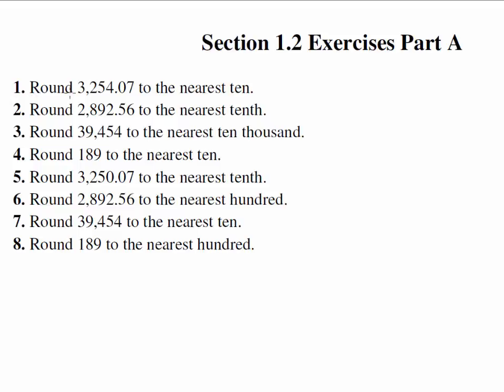Number 1, round 3,254.07 to the nearest ten. Now remember we're going to look at, there's the hundredths place, the tenths place, so it's not that one. The ones place, the tens place, oh there's the tens place right there, the hundreds place, the thousands place. So we're going to round to this place, this is the guy that we need to round to.